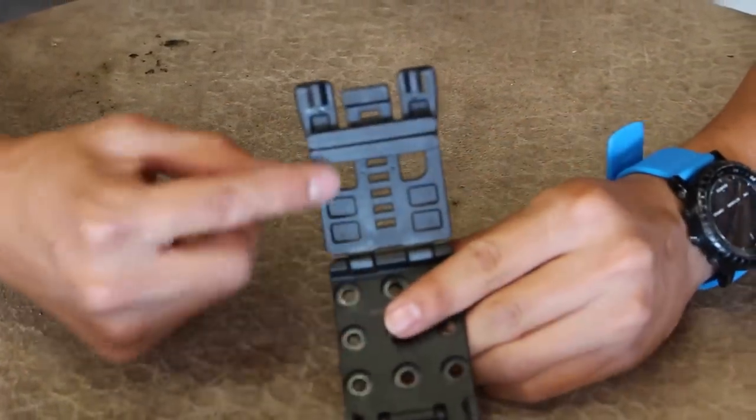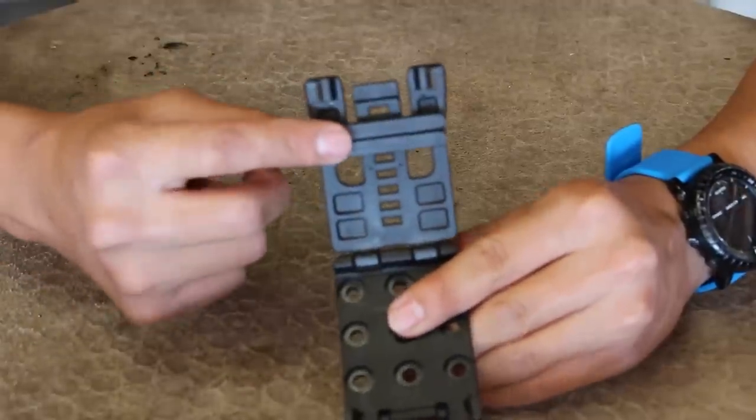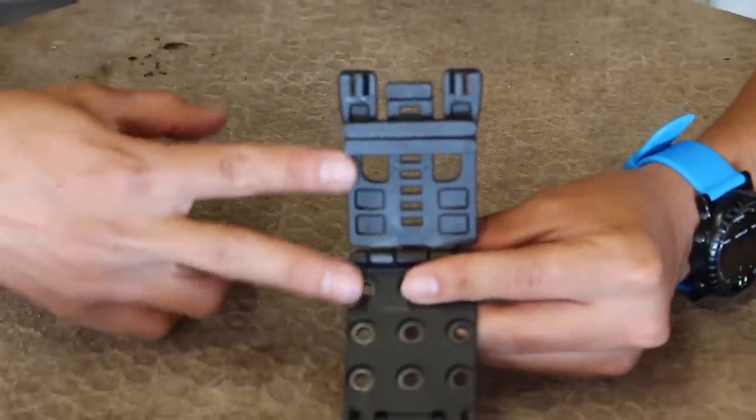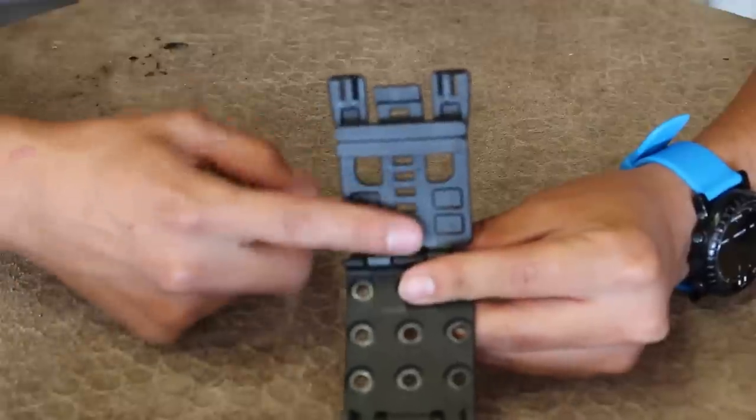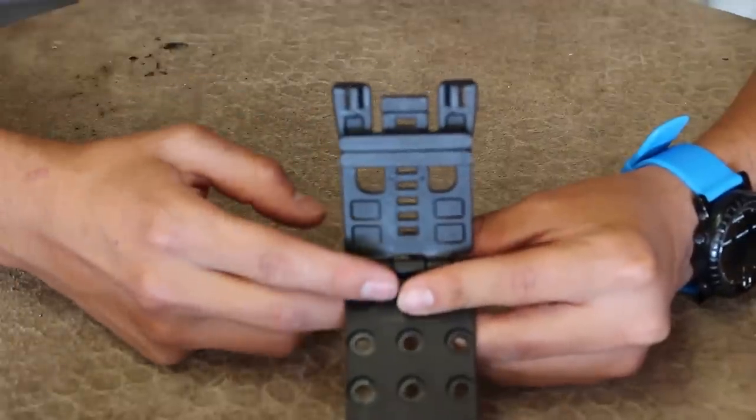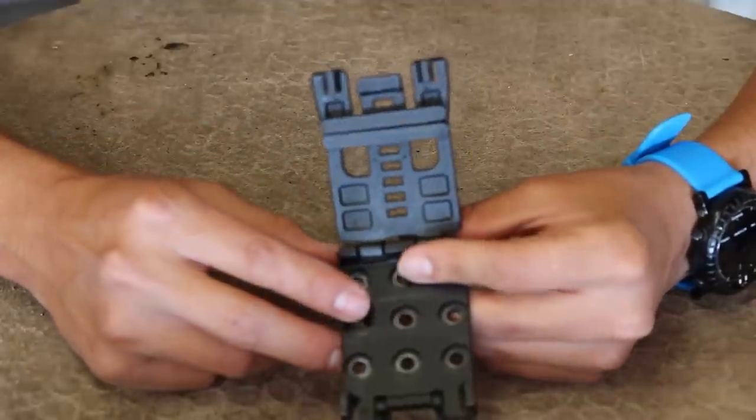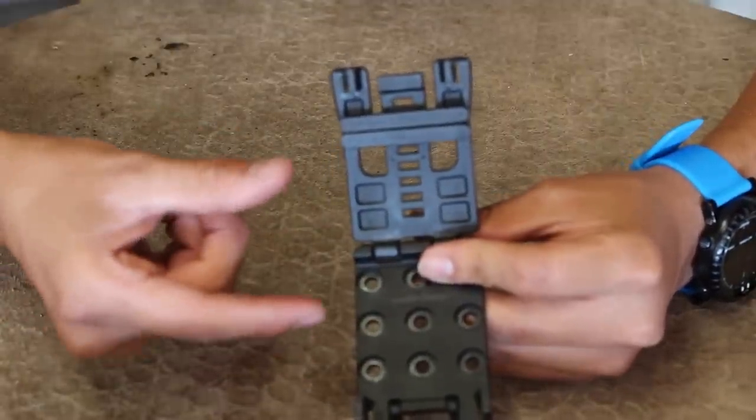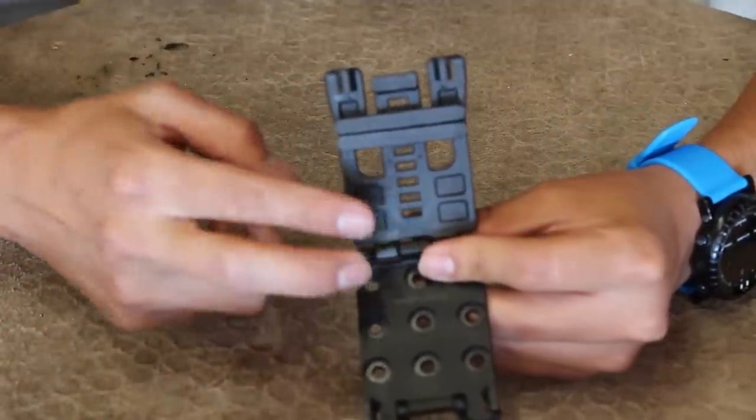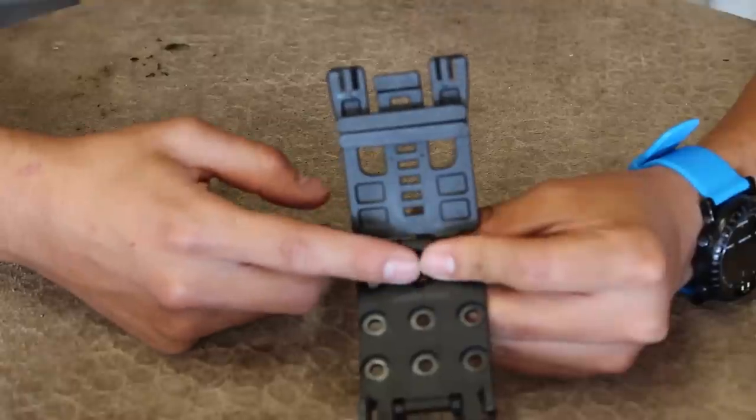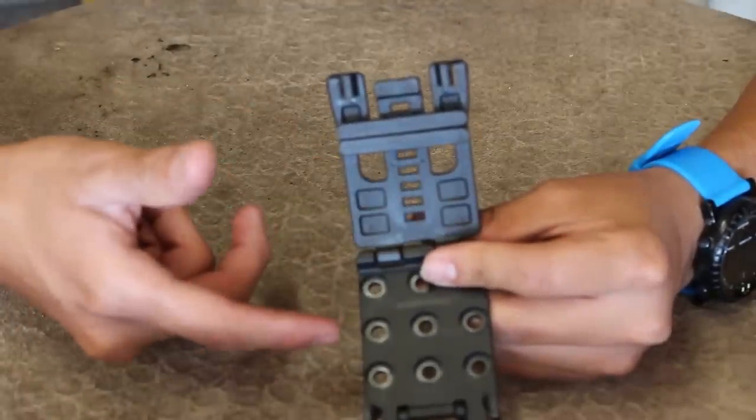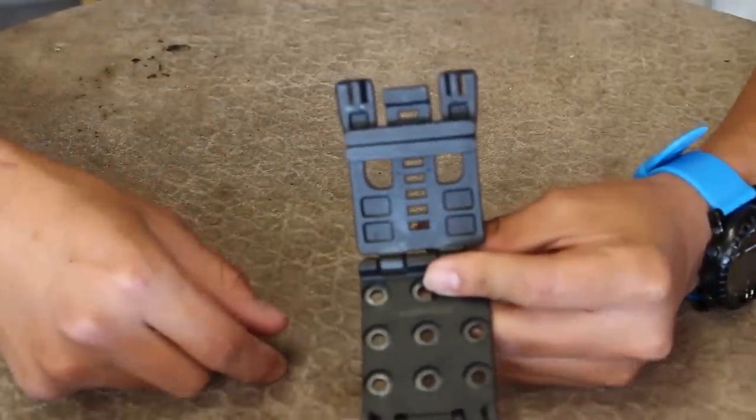Now from the inside, what you can see is that there's these guides right here. What these are for is to adjust the width of this open space so you can custom size it to fit any belt that you have. If you have a really thin narrow belt you could just move these guides down to make that fit, or if you have a really wide belt you can completely remove those to make it fit.